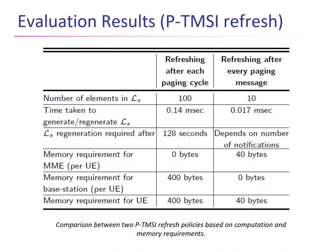Now let's look at some results for the PTMZ refresh approaches. The second approach — refreshing only after a paging message is received — is much more efficient than approach one, which refreshes after each paging cycle. We require fewer elements in the PTMZ list LS. The time to generate or regenerate the list LS is low in both cases, but much lower for approach two. Regeneration is required after 128 seconds in approach one, which corresponds to the default 100 paging cycles. For approach two, it depends on the frequency of actual notifications received. The memory requirements for the MME, base station, and UE are very minimal for both approaches.